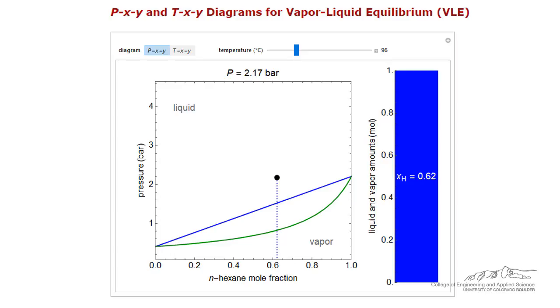At high pressures, the mixture will be in the liquid state. As the pressure is reduced, the mixture will be two-phase, liquid and vapor, and as the pressure is further reduced, the mixture will be in the vapor phase.